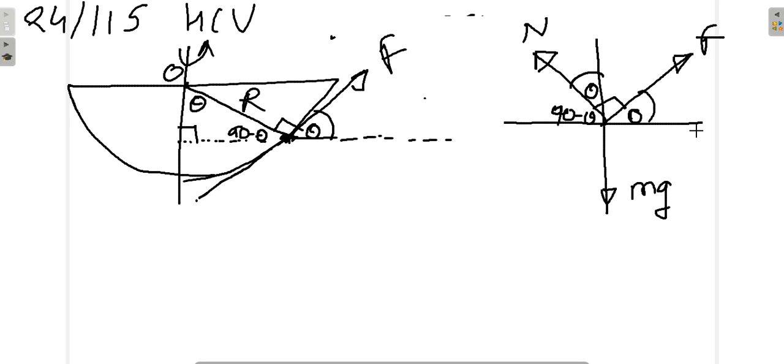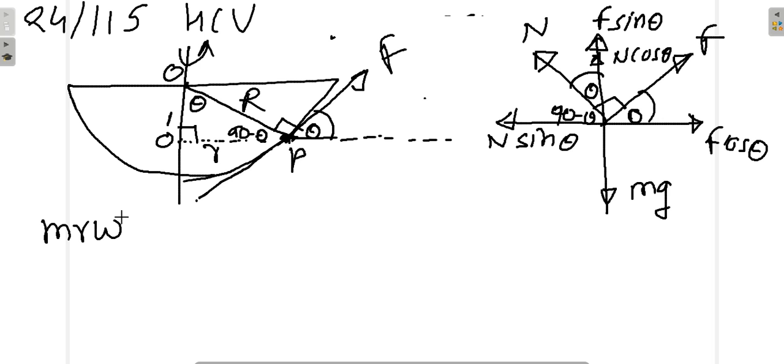Now let me resolve this. F cos theta, this will be F sin theta. Normal reaction if I resolve it will be N cos theta upwards and N sin theta. Now N sin theta minus F cos theta gives you the necessary centripetal force for rotation. Let us take this O dash P as small r, which is the radius for centripetal force for circular motion. So I have one equation: m r omega square is supplied by N sin theta minus F cos theta.